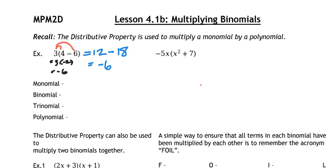For the next problem, negative 5x times the bracket x squared plus 7, we do the same thing — multiply negative 5x into everything inside the bracket. So negative 5x times x squared: the coefficient is negative 5 and x times x squared gives x cubed, so we get negative 5x cubed. Then negative 5 times 7 is negative 35, and we bring down the x to get minus 35x.